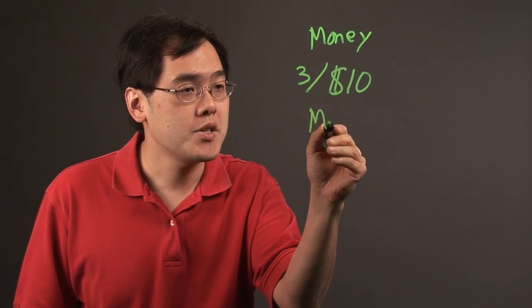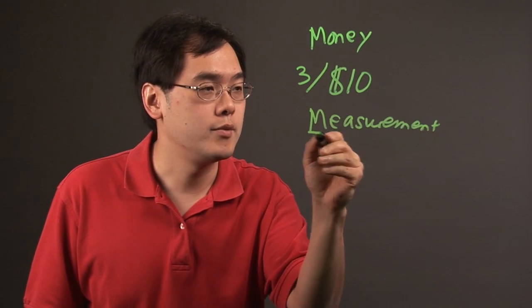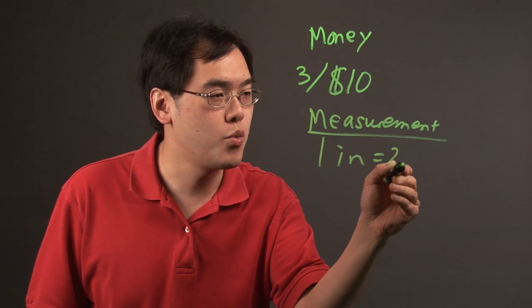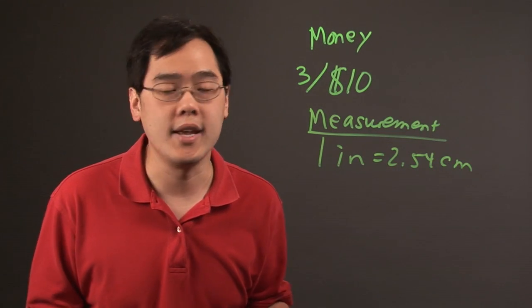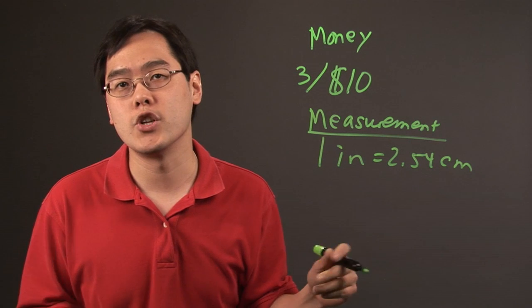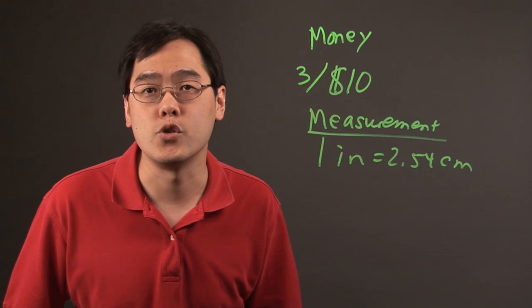Now, something else to consider is that of measurement. You know the idea that one inch is equal to 2.54 centimeters. However, you can estimate by just saying one inch is a little more than 2.5 centimeters. So it gives you an idea as to what kind of room you have to work with.